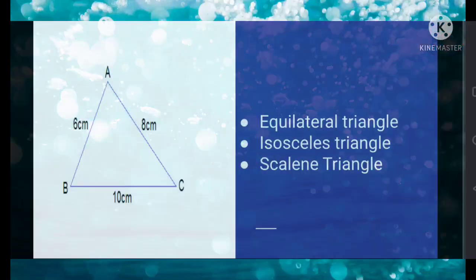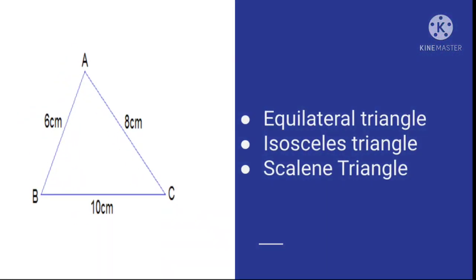Question number 6: Again, a figure is given to you. Look at the sides of this triangle carefully and identify the type of triangle. Whether it is an equilateral triangle, an isosceles triangle, or a scalene triangle. Look at the figure carefully and try to identify the triangle.